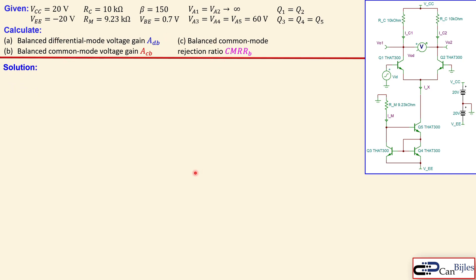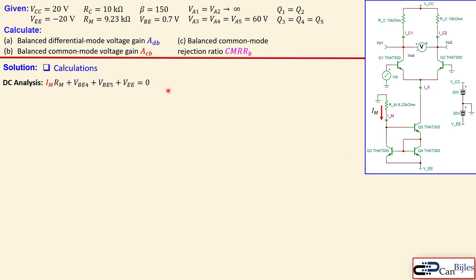Before moving on, let's designate the current Im, which is our reference current. To calculate Im, we set up a KVL loop from ground all the way to Vee, summing the voltage across Rm using Ohm's law, plus Vbe5 and Vbe4, and Vee. Rearranging and substituting the circuit values, we get Im equal to 2.015 milliamps.